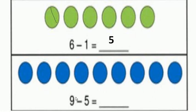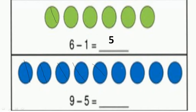Our sum is 9 minus 5. First, we cut 5 objects among these given 9 objects: 1, 2, 3, 4, 5. Keep this in mind while doing subtraction sums — we should count the remaining objects. The remaining objects are 1, 2, 3, and 4. So 9 minus 5 equals 4.